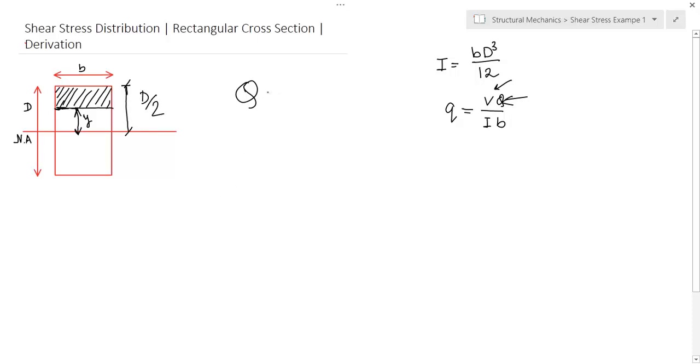Let this area start at a distance of y from the neutral axis. This is d by 2. So, what is Q? Q is the integration y dA. That is the first moment of area.